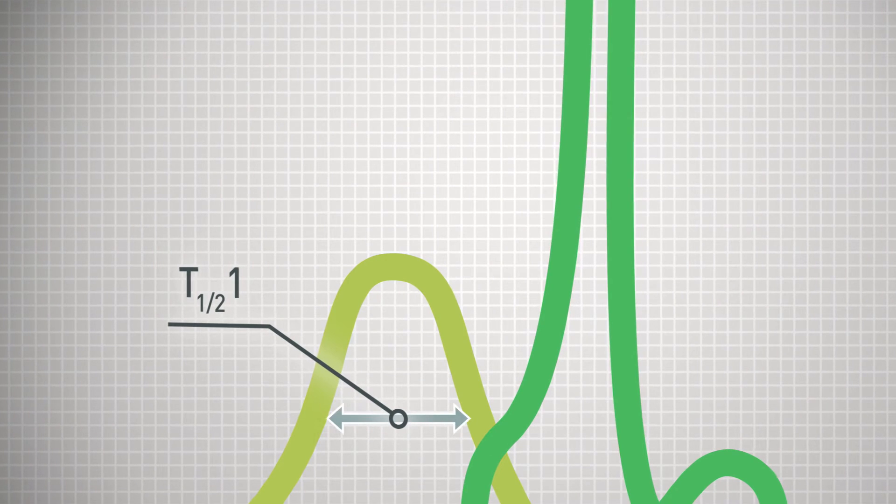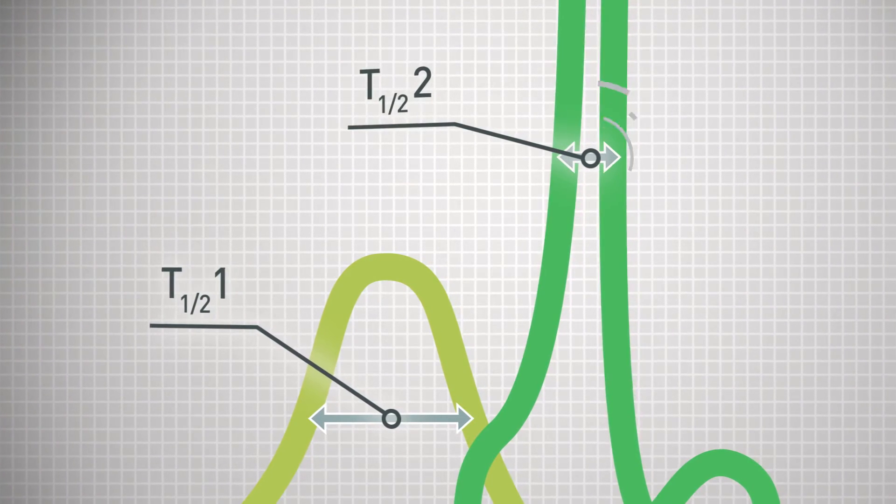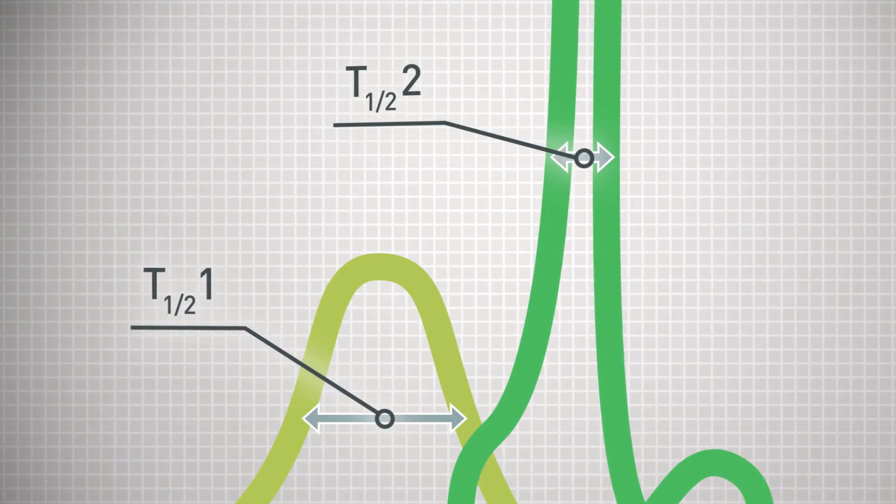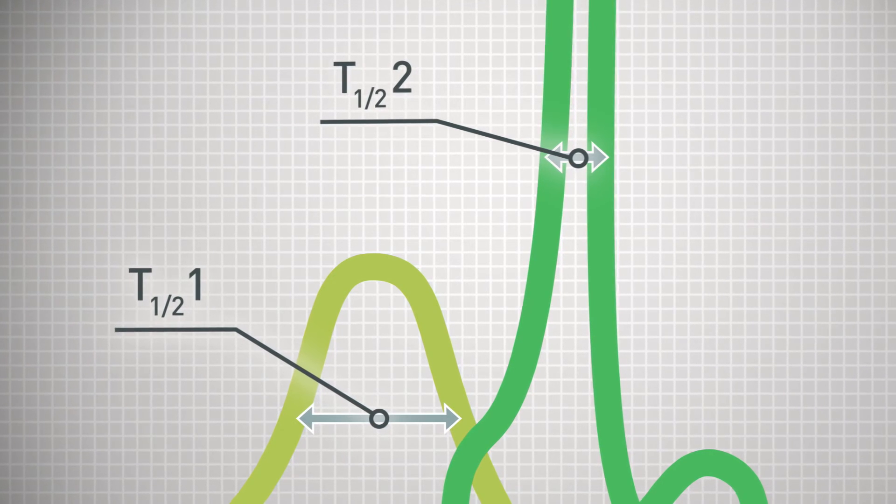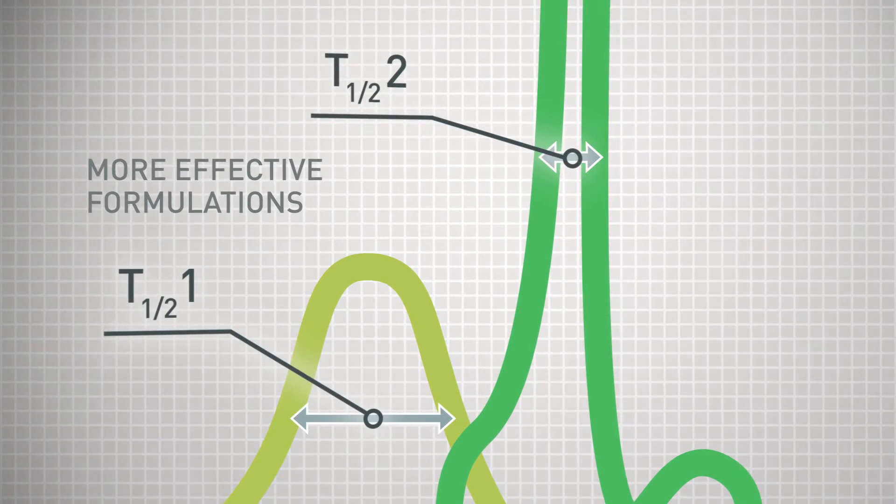T half is the width of the DSC peak. Narrower peaks indicate more compact protein structures, which frequently result in more effective formulations.